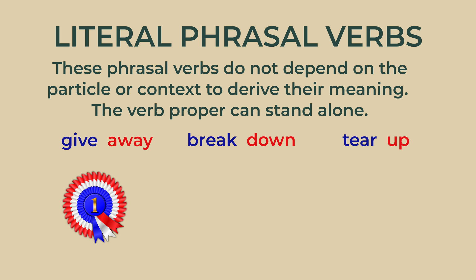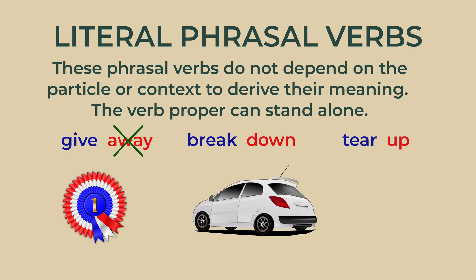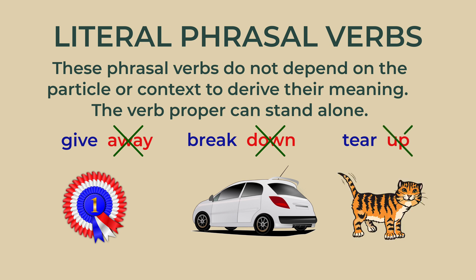The company will give away a prize. We can remove the particle 'away' and we can still understand that something will be given. The car broke down on the highway — even as 'the car broke on the highway,' you can tell that the car stopped working. Tear up: the cat's long claws will tear up the curtains. Even if we remove the particle 'up,' tear means that the curtains will be shredded. You still understand what the main verb is expressing.